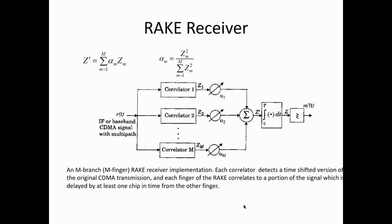The RAKE receiver receives multiple copies of the signal, and each received copy is processed by one correlator — called a finger of the RAKE receiver. These correlators provide phase shifting and time delay. The signals are then added up, and finally, with the help of an integrator and decision-making device, the signal is demodulated.